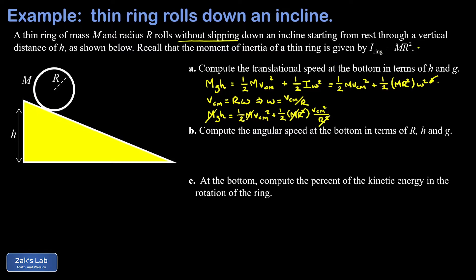What we have on the right hand side is one half v squared plus another one half v squared which gives a total of one v squared. So everything simplifies to gh on the left hand side and v center of mass squared on the right hand side. We quickly solve for the center of mass velocity, that's the translational velocity, and it's just the square root of gh.